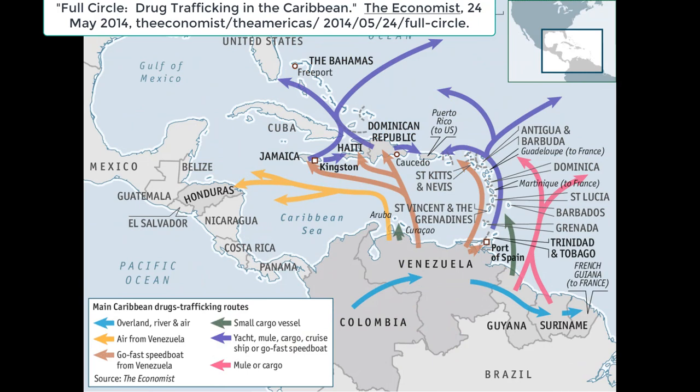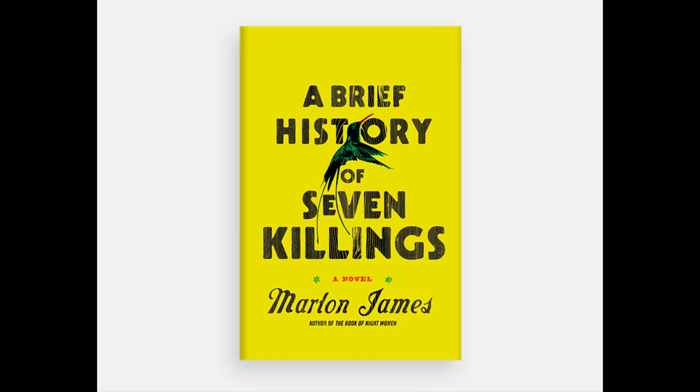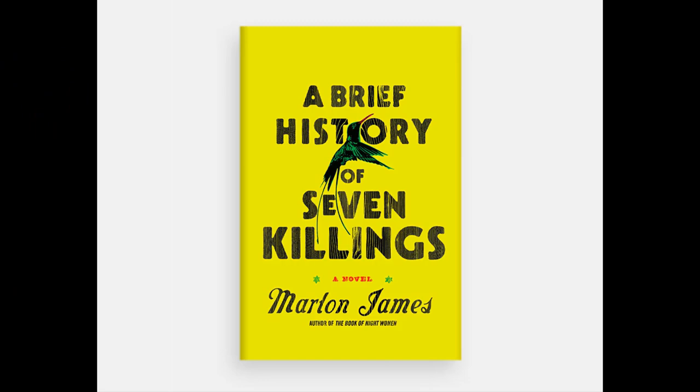Neoliberalism has unequivocally played a role in the transformation of violence in Jamaica by: first, increasing gang rivalries; second, increasing gun crimes and homicides; and third, transforming political enforcers into violent entrepreneurs. These changes dramatically transformed Kingston at the time of the novel. For another fictional portrayal of this time period, please read Marlon James' The Brief History of Seven Killings. For a comprehensive history of Kingston, please read Colin Clark's Kingston, Jamaica: Urban Development and Social Change, 1692–1962.